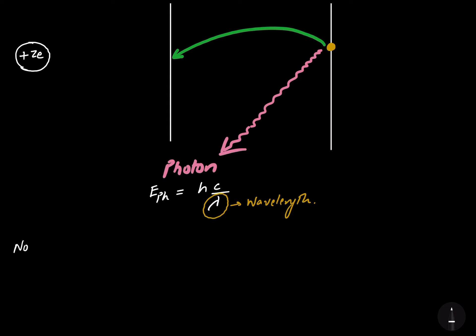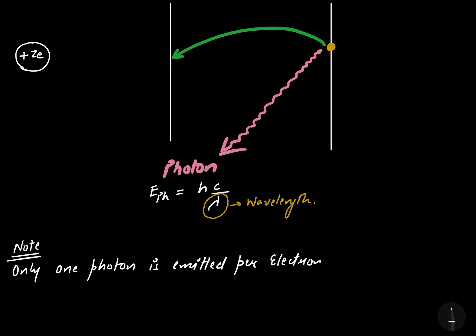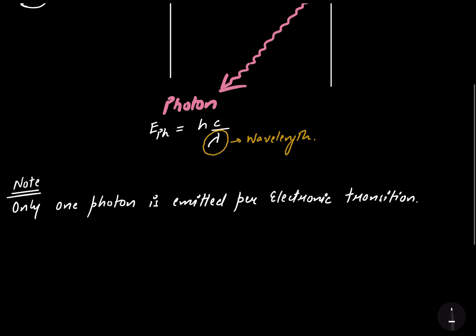An important note to remember: only one photon is emitted per electronic transition. Now we are going to derive the Rydberg equation.